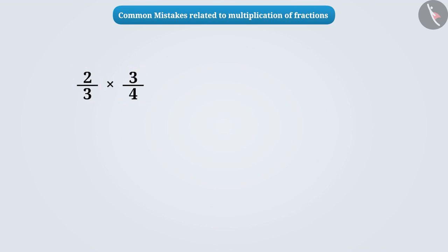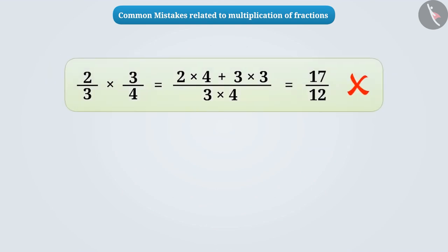some children multiply the numerator of the first fraction by the denominator of the second fraction and the numerator of the second fraction by the denominator of the first fraction. Then they add them. This is wrong.